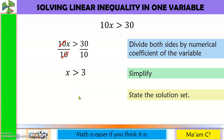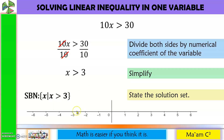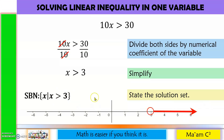Let's state the solution set. For set builder notation, this is the set of all X such that X is greater than 3. For the graph, since 3 is excluded — no 'or equal to' — we use a hollow circle on 3, then draw a line with an arrowhead going to the right. For interval notation, we start at 3 (not included) going to positive infinity: (3, +∞).